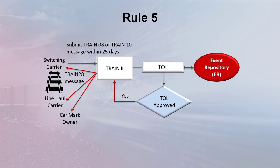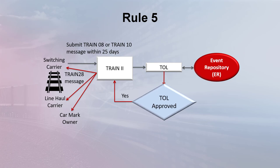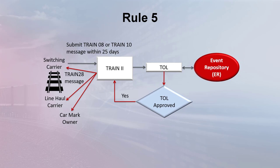Railink edits the messages for syntax and compliance with LCS interchange. The TOL cannot begin prior to assignment of liability to the switch carrier by LCS, and the TOL cannot extend beyond the termination of the switch carrier's liability as defined by LCS. When a TOL is approved, Railink sends a Train 28 message to the switch carrier, line haul carrier, and CarMark owner. The transaction is also posted to the Event Repository. This message can be treated as an interchange when CarHire liability is determined. If traced, equipment will be in the switching carrier's possession.